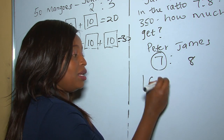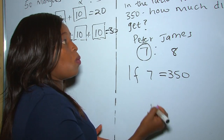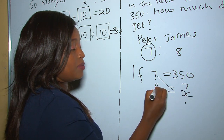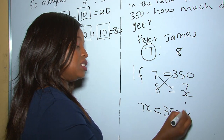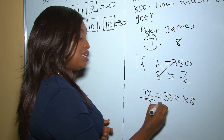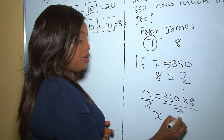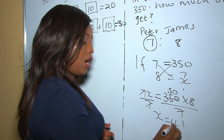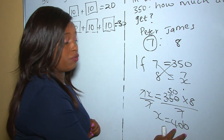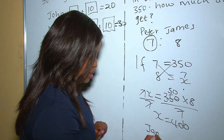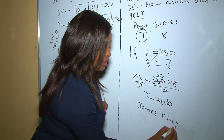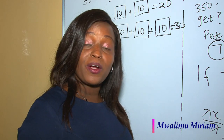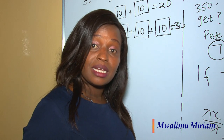We use cross multiplication: if 7 equals 350, what does 8 equal? Let x be the unknown. So 7x equals 350 times 8. Dividing both sides by 7 gives x equals 400. Therefore James got Kenya Shillings 400. I wish you the best — kindly remember to subscribe, leave a comment, share with your friends, and remember: practice makes perfect.